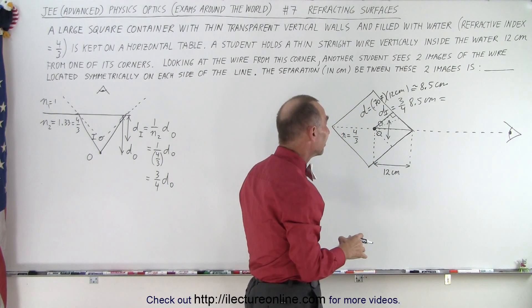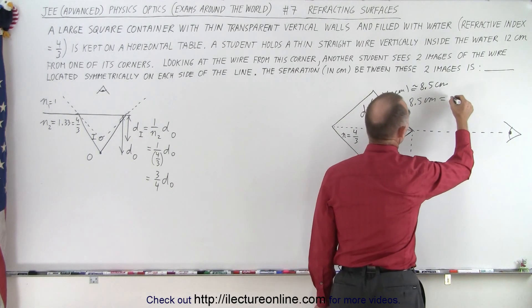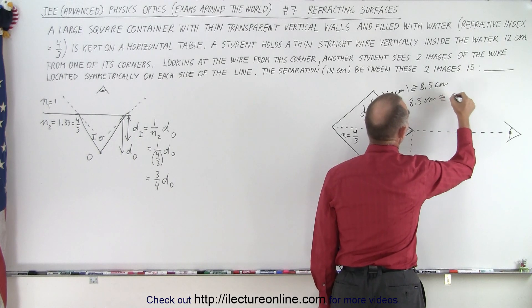Now 3 quarters of 8 would be 6, and 3 quarters of 5 is 1 and a quarter. So that would be about 6.1 centimeters.